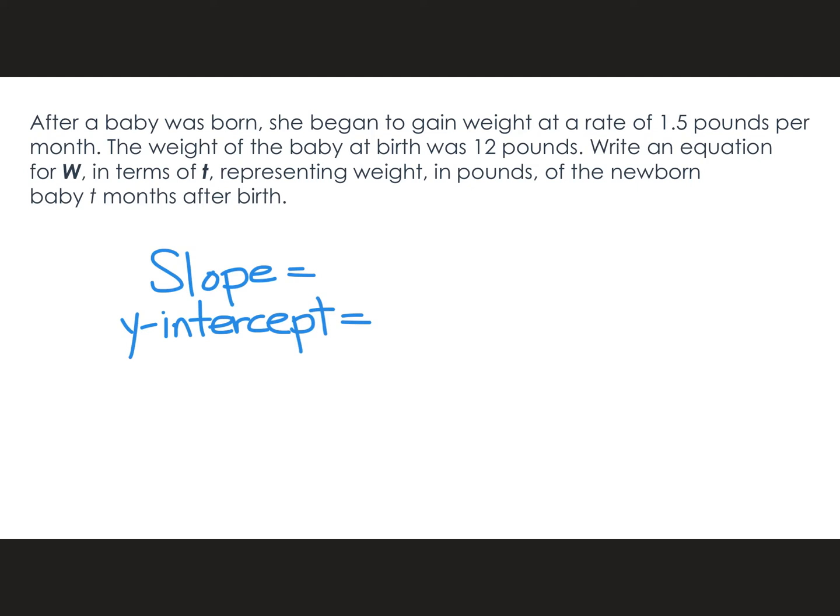After a baby was born, she began to gain weight at a rate of 1.5 pounds per month. The weight of the baby at birth was 12 pounds. Write an equation for w in terms of t representing weight in pounds of the newborn baby t months after birth. So what's the slope — what's happening over and over again? That's the 1.5 pounds per month.